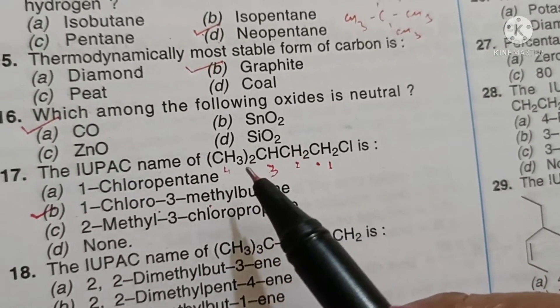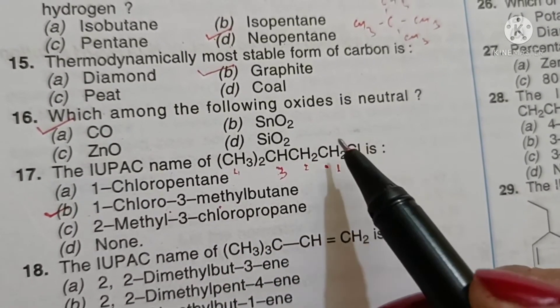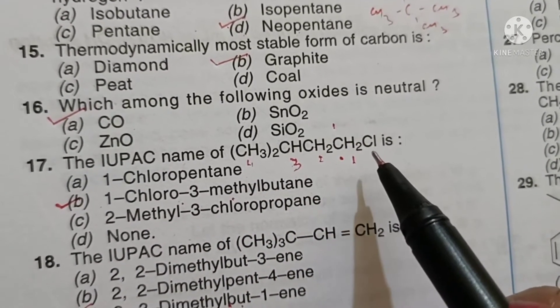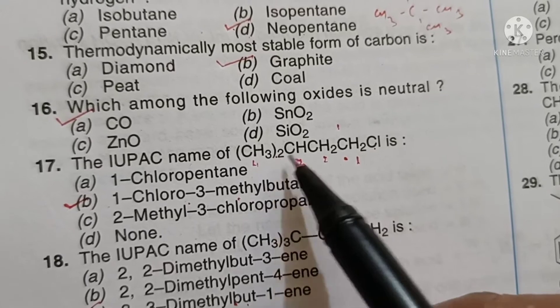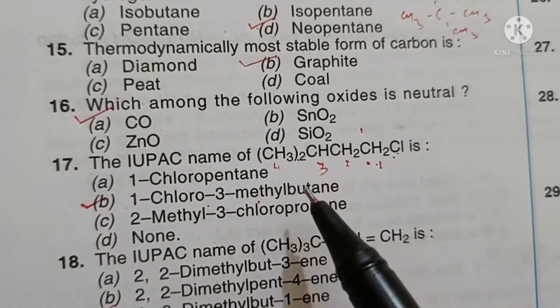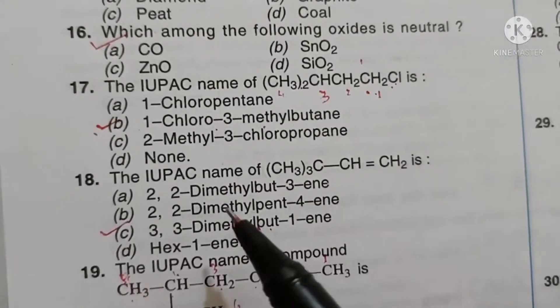IUPAC name of this compound is 1, 2, 3, 4. So it is Cl, this is methyl. C comes first, so 1-chloro-3-methyl-butane. Option B is the correct answer.